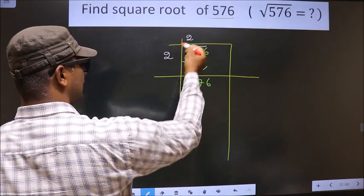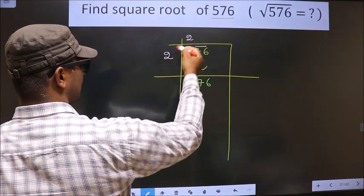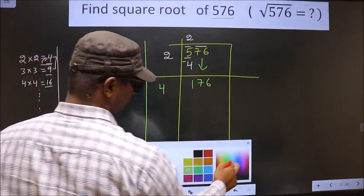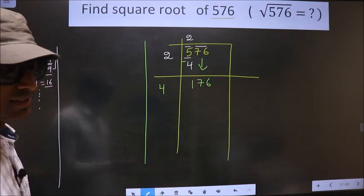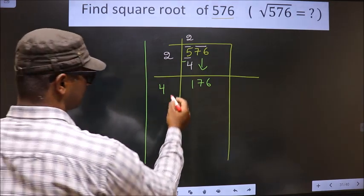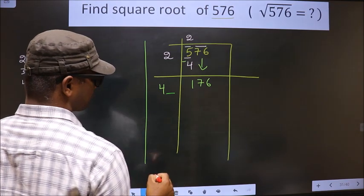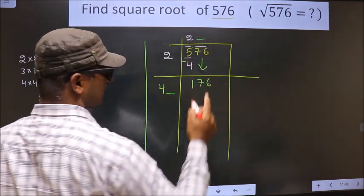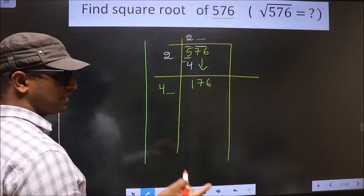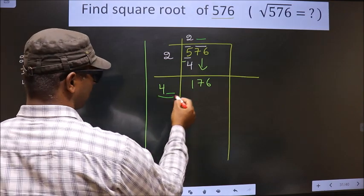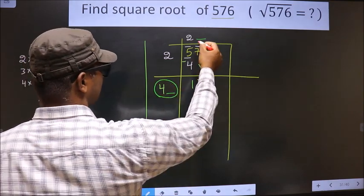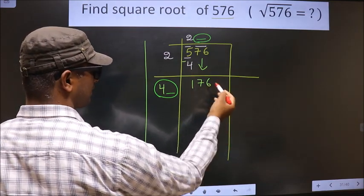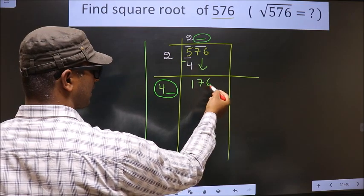Now here you add these two numbers: 2 plus 2 = 4. Now we have to write a number here. The condition is whatever number we write here, we should write the same number there as well. And when we multiply this number by this number, the resulting number should be equal to or smaller than 176, but not larger than it.